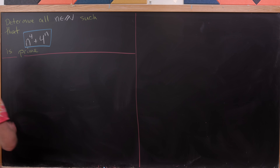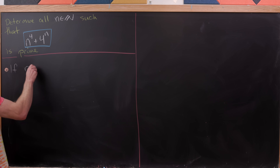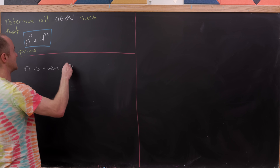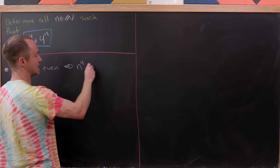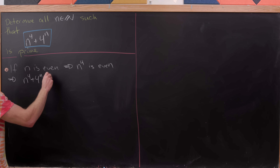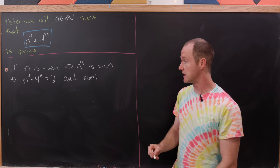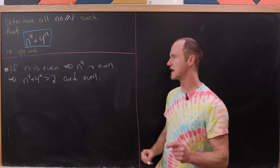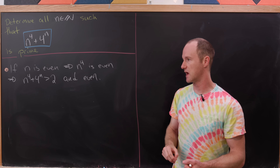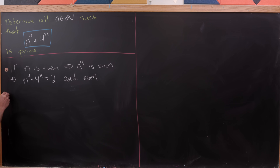Let's dive right into this. Starting with a pretty obvious observation: if n is even, then n to the fourth is even and four to the n is even, which tells us that n to the fourth plus four to the n is bigger than two and even. There is an even prime, which is the number two, but if you've got an even number larger than two, it can't be prime. So if it can't be prime when n is even, that means n must be odd.